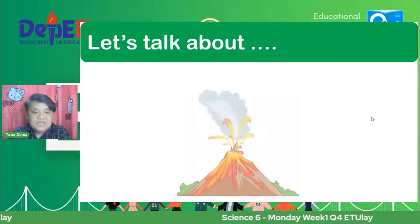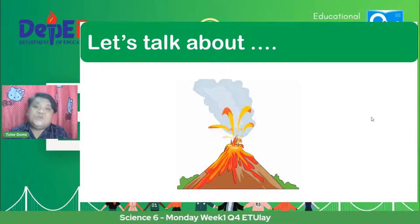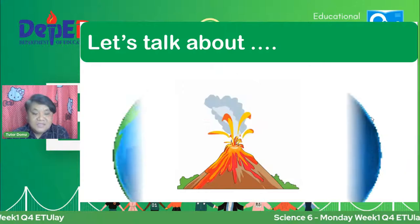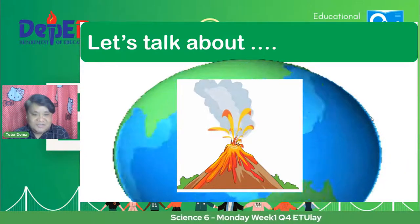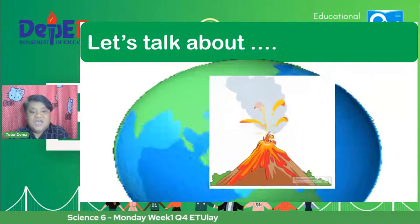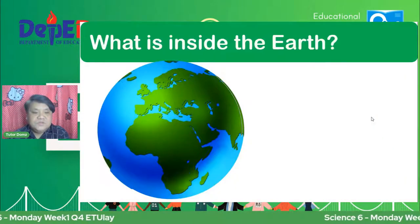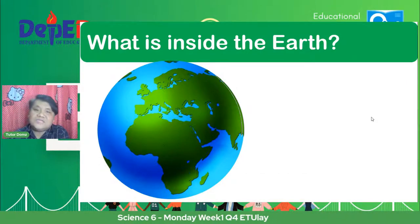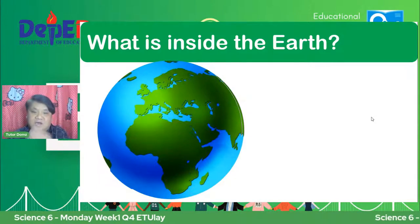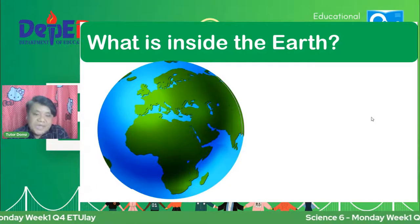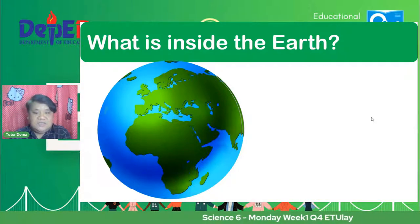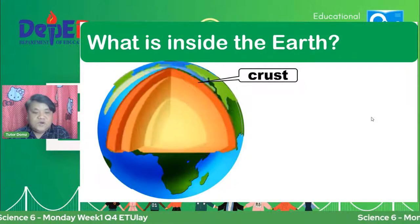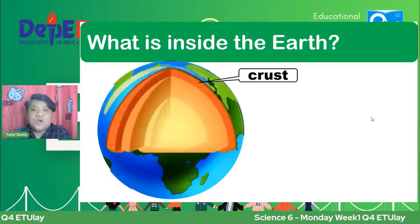So let's talk about our picture. Nakita nyo naman we have the volcano, and then ang ating Earth. So we will talk about these two pictures. This day, we're going to analyze and discuss about what are inside the Earth. So ano nga ba yung nasa loob ng ating mundo? So we have here the parts of an Earth. The outer part is what we call the crust.